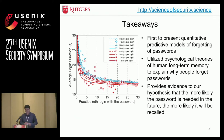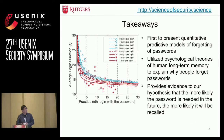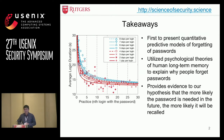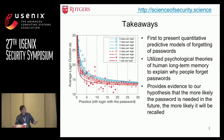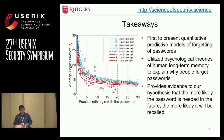Let's go to the takeaways directly. Our work is the first to quantitatively model the forgetting of passwords. We utilize the psychology theory of human long-term memory to explain why people forget their passwords. We also conducted a field study to provide evidence for our hypothesis that the more likely the password is needed in the future, the more likely it will be recalled. The figures on the left show the fitting result of our model to the field study — the points are the data and the lines are our model. They fit pretty well.